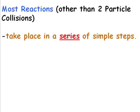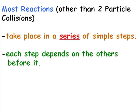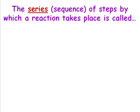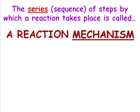Most reactions that are not just 2 particle collisions take place in a series of simple steps, where each step depends on the others before it. The series or sequence of steps by which a reaction takes place is called a reaction mechanism.